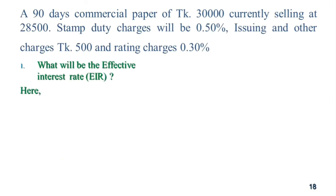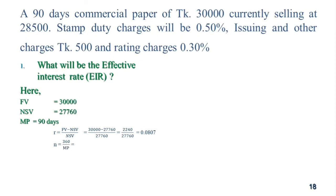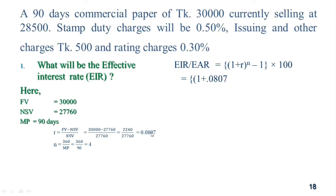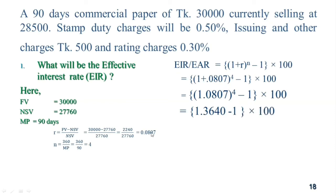Effective interest rate — also effective interest rate. 0.0807, for the mandate — 1 plus 0.0807, related to the number in a month. That is 1.3640 minus 1. The result: approximately 40 percent for the cost of commercial paper.